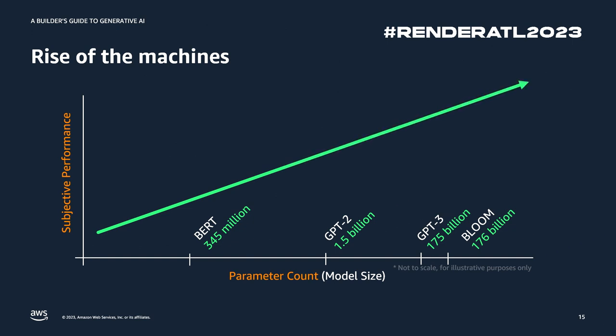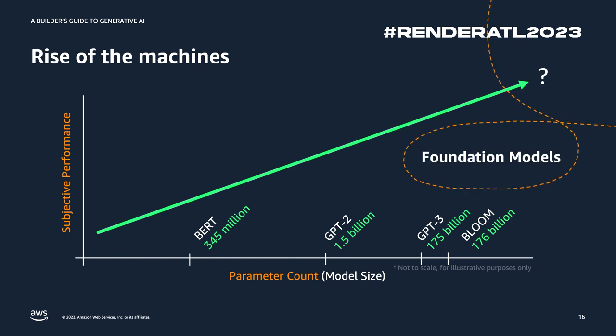Large language models have been growing. One of the first ones had 345 million parameters. A parameter is a way to represent knowledge in a model — a numerical representation to understand what word could come next. Then GPT-2 came out with 1.5 billion parameters. GPT-3 with 175 billion. So the model is getting bigger, more knowledge is embedded, and more tasks can be done. We call these foundation models. Foundation models are what's powering these amazing generative AI applications today — filled with lots of word embeddings and language so we can do all these cool applications.